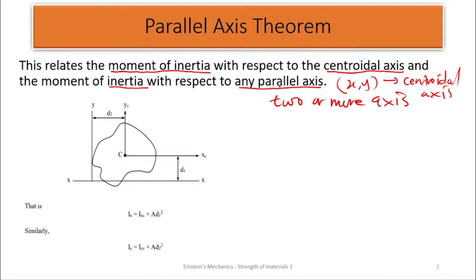The other parallel axis is the one the question will ask us to find the moment of inertia about. So with the centroidal axis you can always find it, and another axis will be given to you. Let's look at the figure below. We have our axis Y and we have the axis X here, and this is the figure.